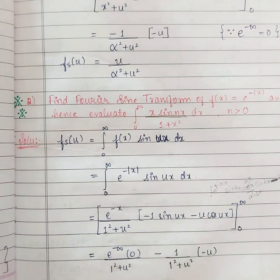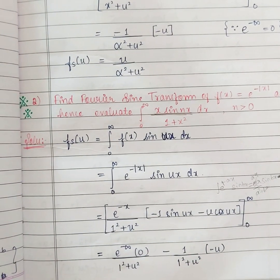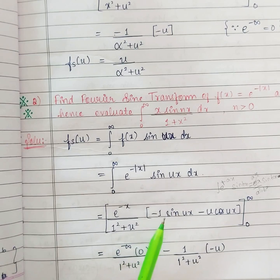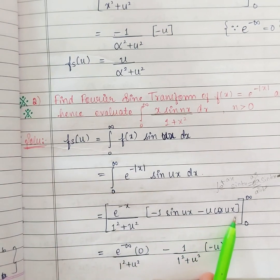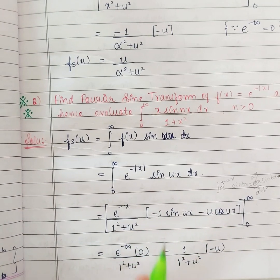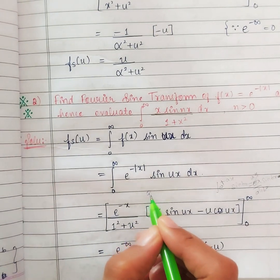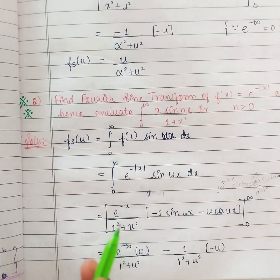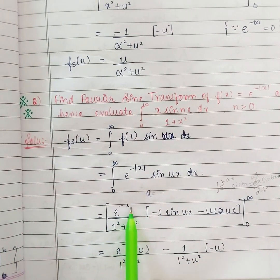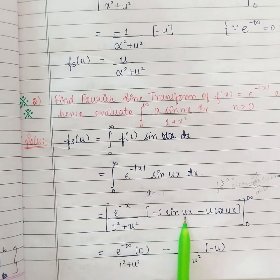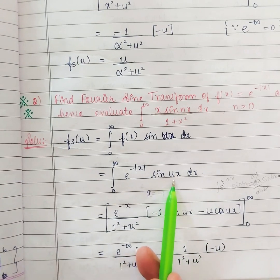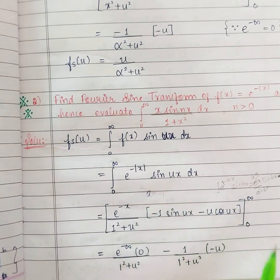It is similar to the formula integral e power ax sin bx. The formula is e power ax divided by a square plus b square, times a sin bx minus b cos bx. In the place of a we have minus 1 — e power minus 1x — so in the place of a we have minus 1. So: minus 1 sin ux, because in the place of b I have u. Everything else is the same and we have just replaced it.